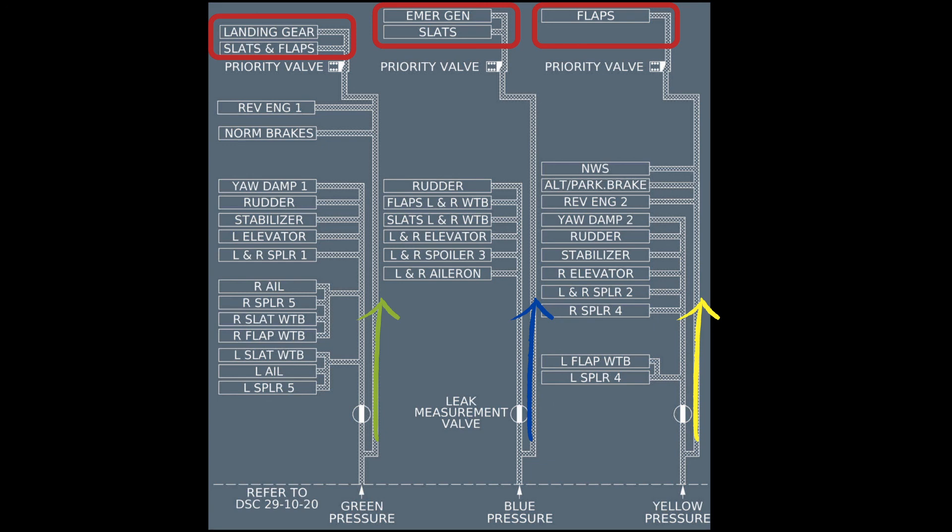The blue system heavy users are the emergency generator and the slats. And the yellow system heavy user is the flaps.